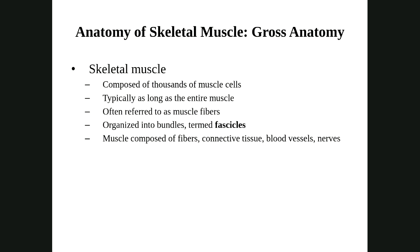Let's look at gross anatomy. We start with the macro view and build to the micro view. Macroscopically, a skeletal muscle is composed of thousands of muscle cells. Our biceps, for example, is a muscle composed of hundreds of thousands of these muscle cells.